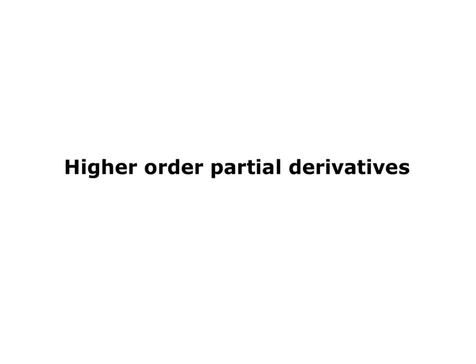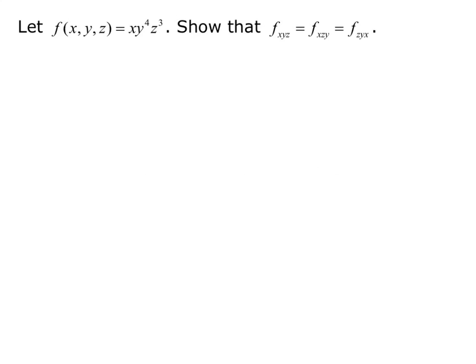Now that we've covered second order partial derivatives, we want to talk about higher order partial derivatives — that's when you're taking the third, fourth, or fifth partial derivative. As you can imagine, given that we have four second order partial derivatives, the higher you get, the more options you have. We're just going to focus on three.